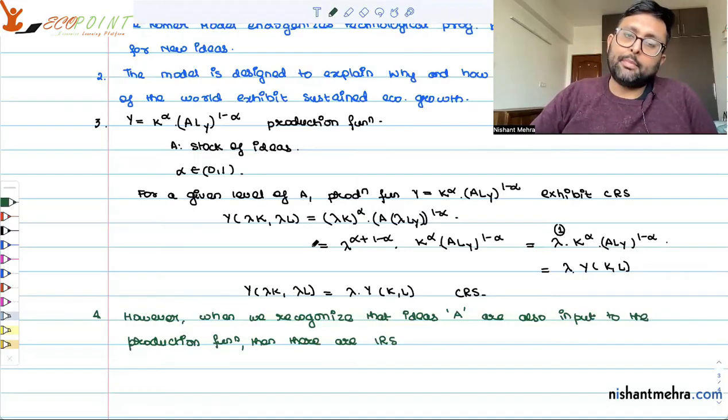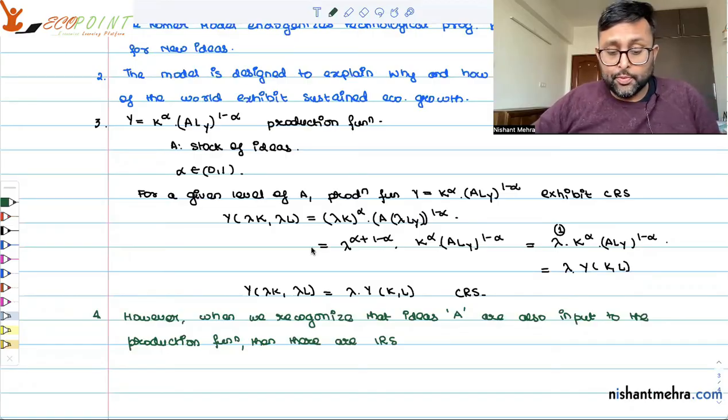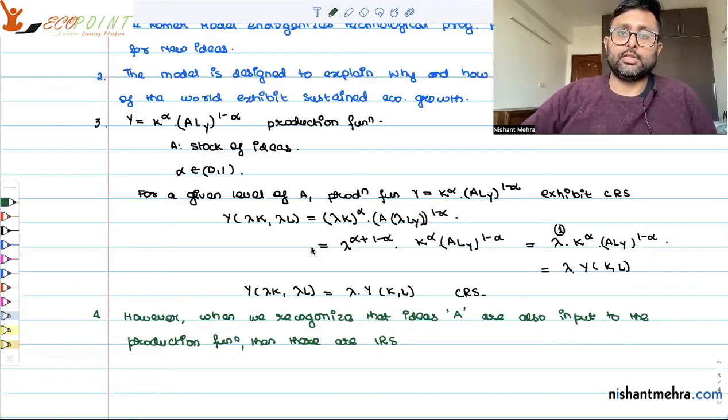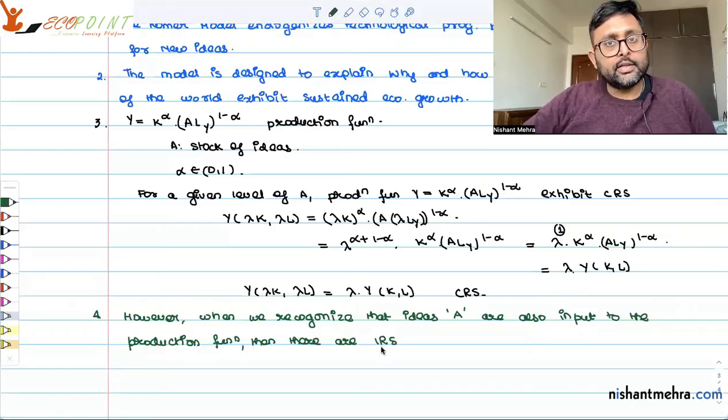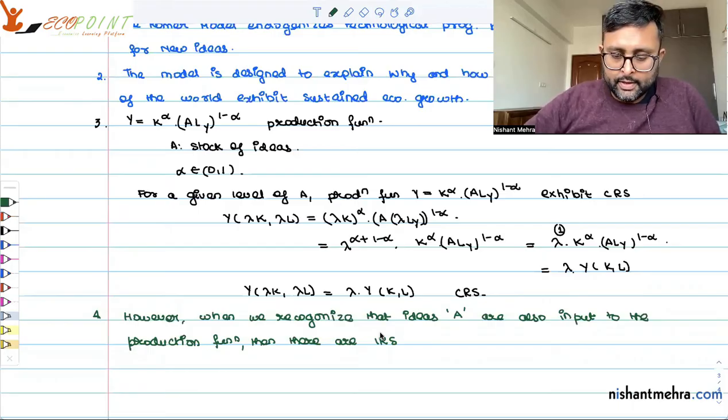So it is like if you have labor and capital double, then the output will double. But if you have ideas double, then the output will more than double. So the production function is going to exhibit increasing returns with respect to all three inputs: ideas, labor, capital. It is exhibiting constant returns to scale with respect to capital and labor. And why do you think you are getting increasing returns to scale particularly with respect to the ideas?